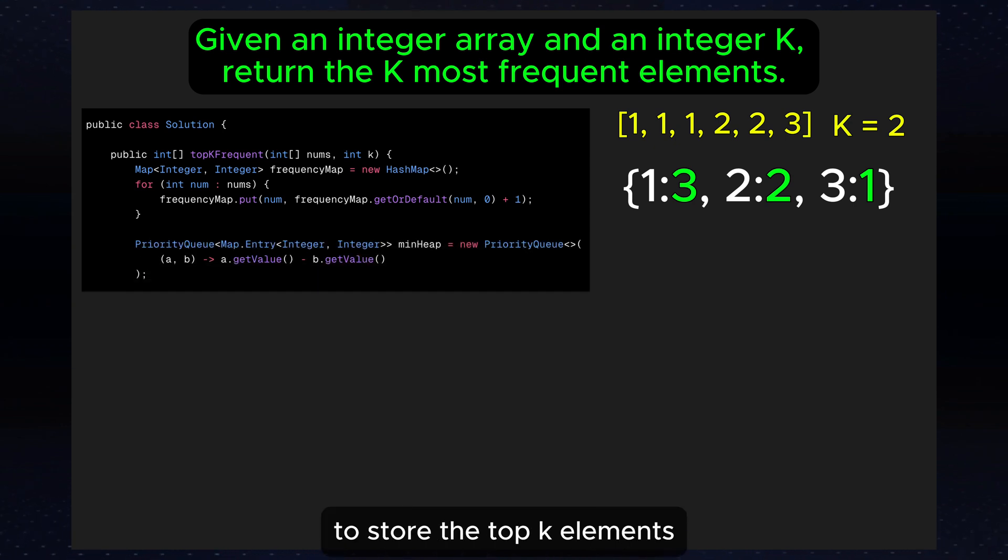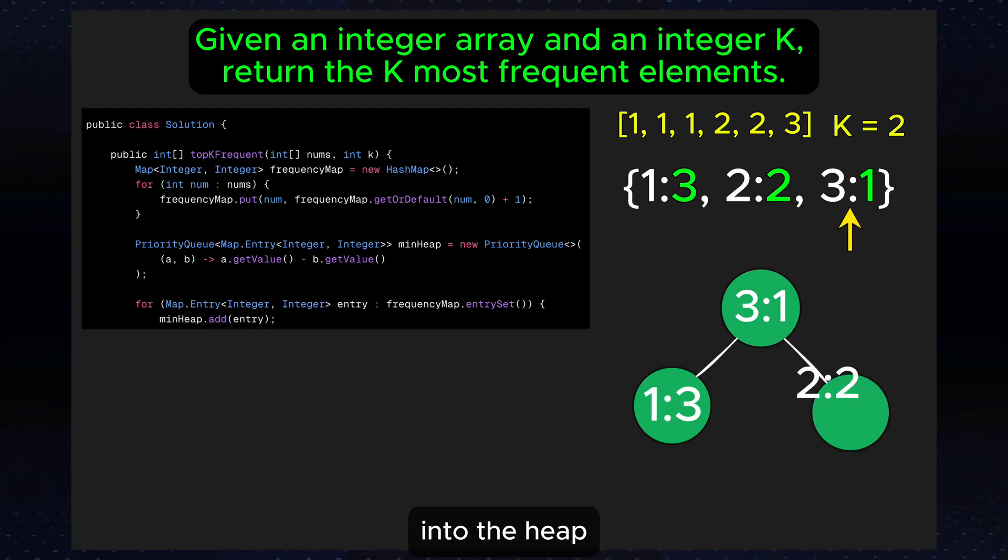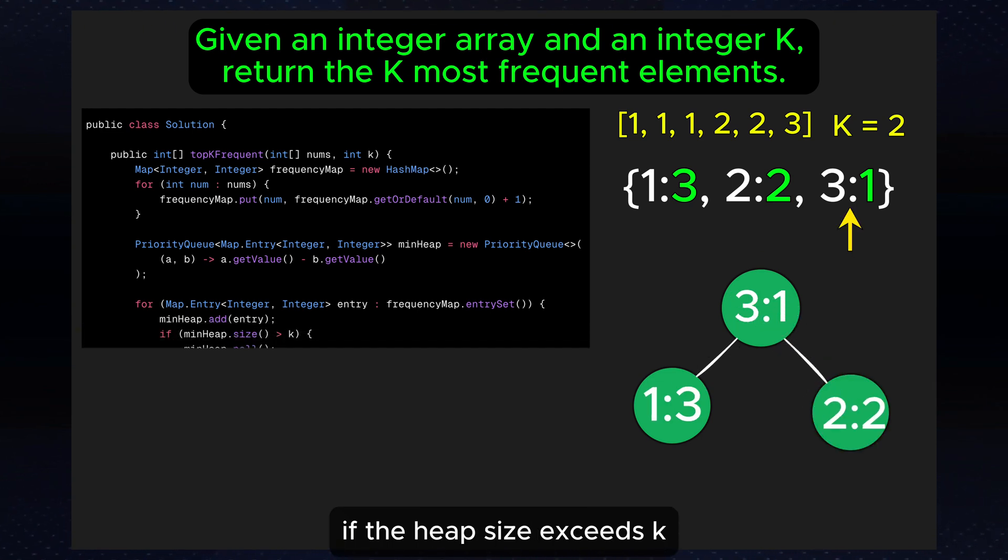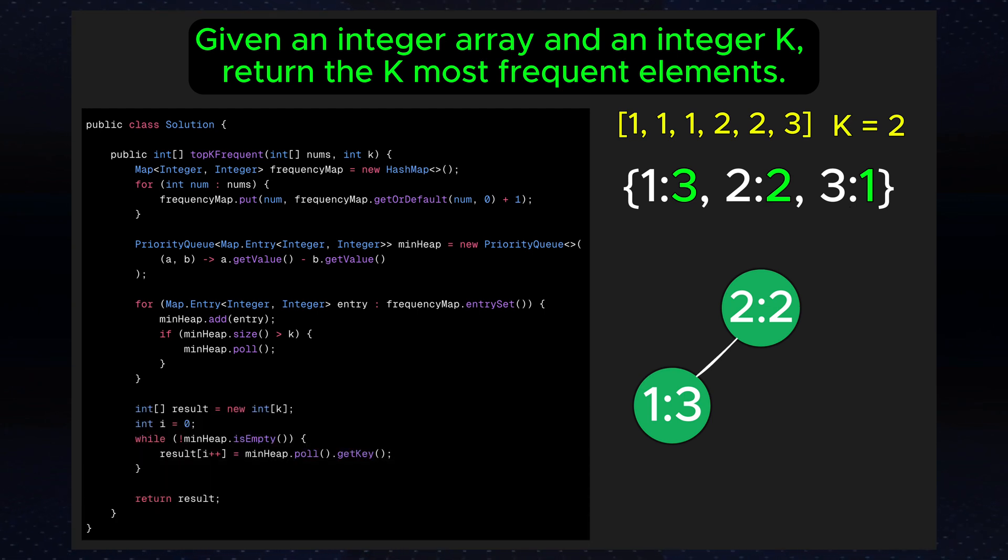Use a min heap to store the top k elements based on their frequency. Iterate over the frequency map and push each element into the heap. If the heap size exceeds k, remove the smallest frequency element to ensure we only store the top k frequent elements. After we have processed all the elements, the heap will contain the k most frequent elements.